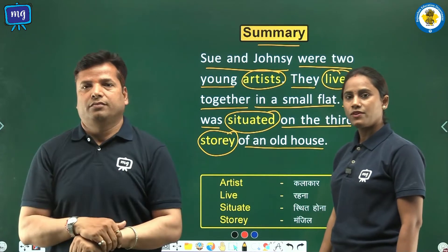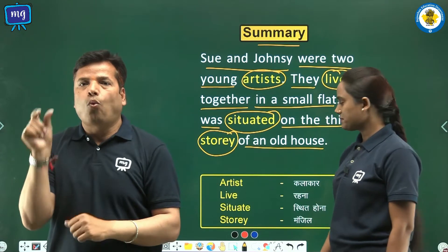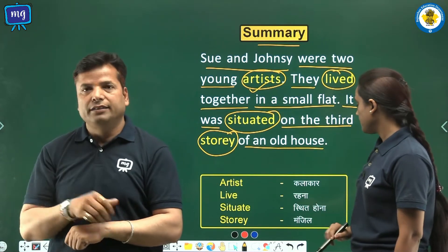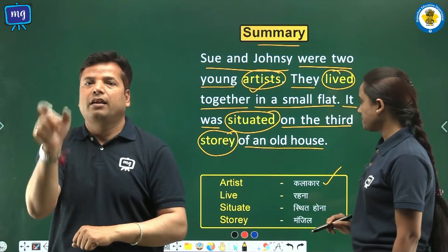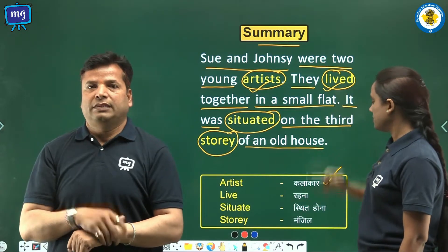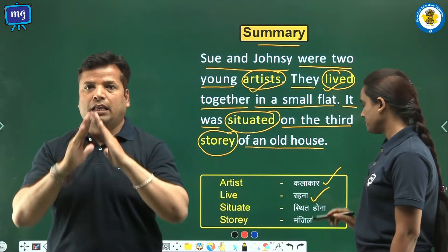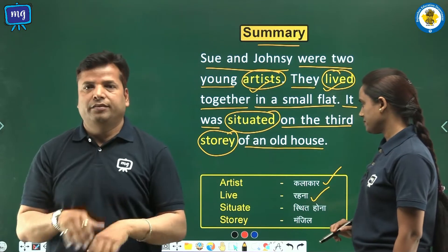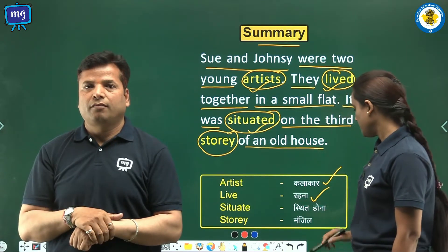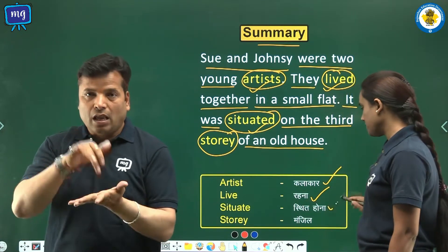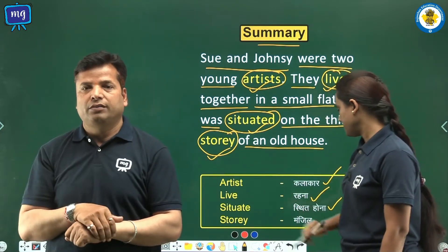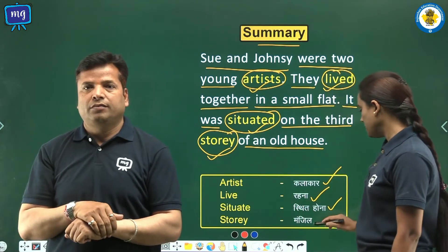Word meanings: artist — kalakar, live — rehna, situate — isthitona, story — manzil.